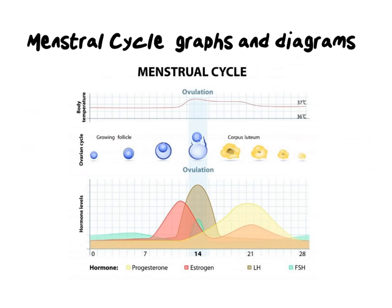Often you'll be faced with different ways to interpret the menstrual cycle — either graphs or diagrams. The graph I have here is useful because it layers three different pieces of information on top of each other: body temperature at the top, what's happening inside the ovary, and the hormone levels. For the hormone level graph, there's a lot of information, and in many test settings and exams, they don't label the hormones — they expect you to know what each one is doing.